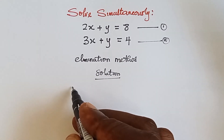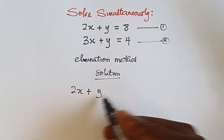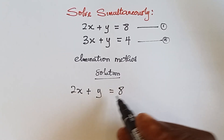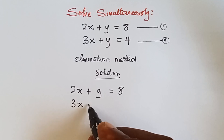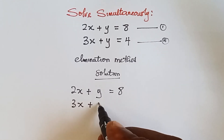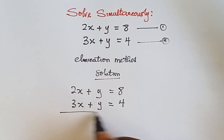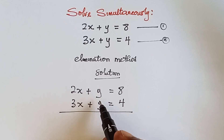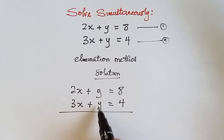In elimination method we tend to eliminate one of the variables. It depends on the equation we have — we can eliminate x or eliminate y by adding or subtracting equation two from equation one.